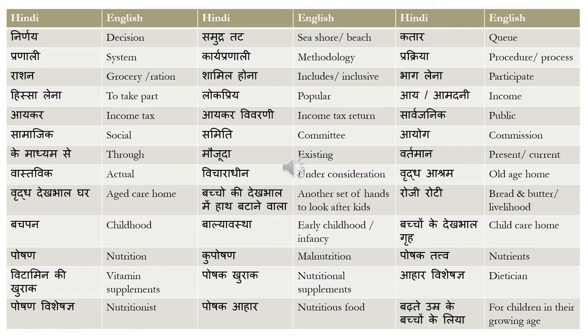'Aykar vivaran' means income tax return. 'Sarvajanik' means public and 'samajik' means social — there is a small difference between these two words and people tend to confuse them since they are similar sounding. Public is 'sarvajanik' and social is 'samajik'. Next, 'samiti' means committee and 'ayog' means commission — for example, the Planning Commission can be called 'Planning Ayog'.